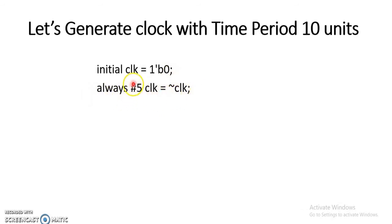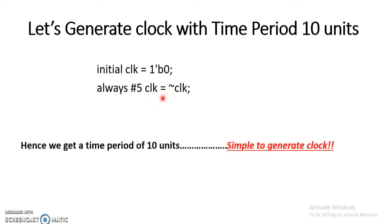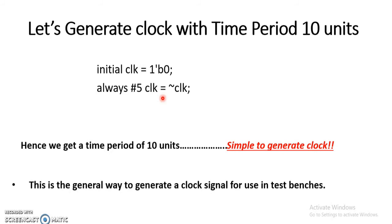Initially clock is zero. After a delay of 5 units, clock becomes the complement — it goes high. Since this always block statement keeps executing again and again, after another 5 units the clock goes low. The clock keeps toggling every 5 units, generating a clock with a time period of 10 units. These clock signals are used in sequential circuits.